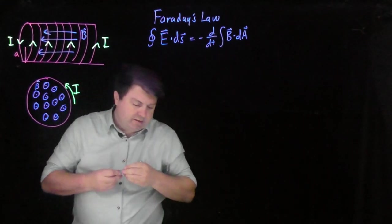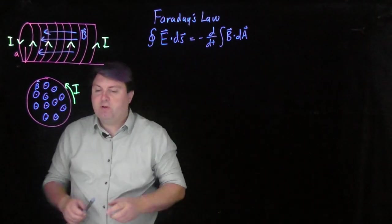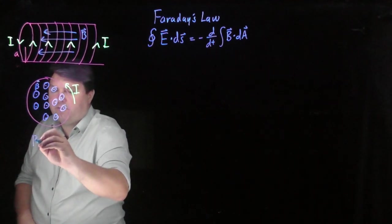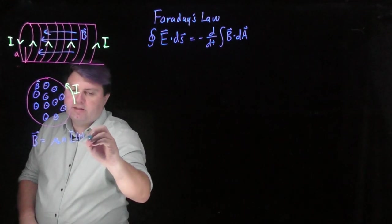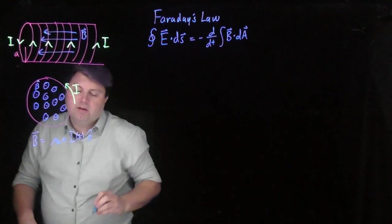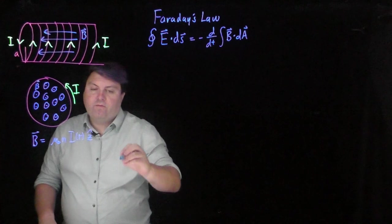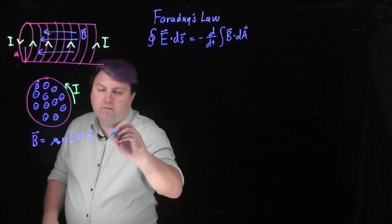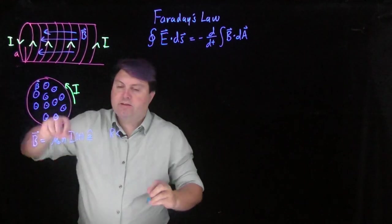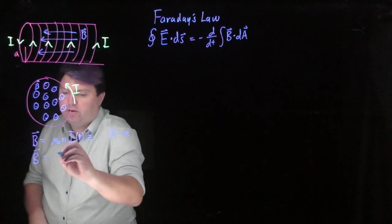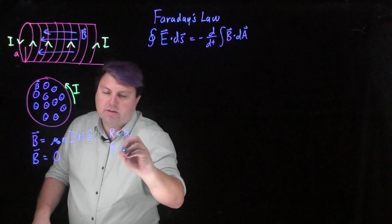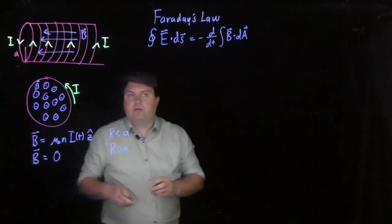So what we can say, and what we found from Ampere's law, is that our magnetic field is mu naught n i as a function of t, z hat, for radiuses less than the radius of the solenoid. And then our magnetic field will be zero for radiuses larger than the radius of the solenoid.